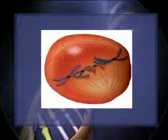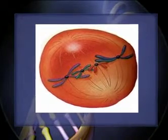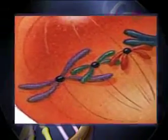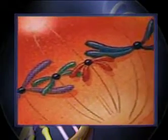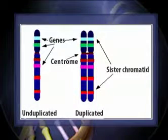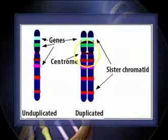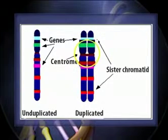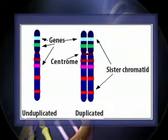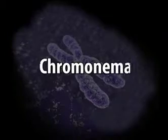Chromatid. At metaphase, each chromosome consists of two symmetrical structures called chromatids, each of which contains a single DNA molecule. The chromatids are attached to each other only by the centromere and become separated at the start of anaphase when the sister chromatids migrate to opposite poles. Therefore, anaphase chromosomes have only one chromatid while metaphase chromosomes have two.